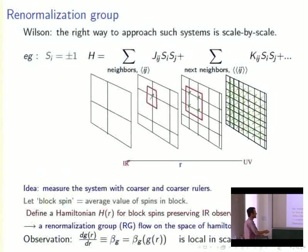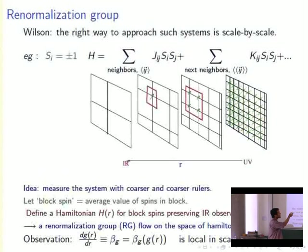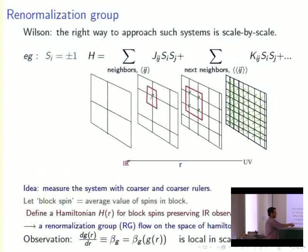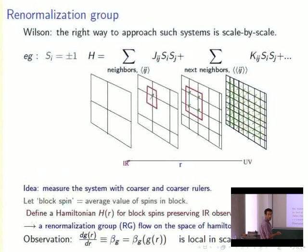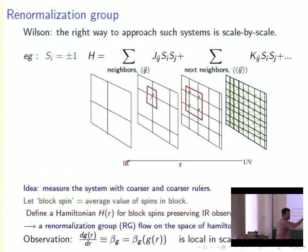This defines a flow — a family of Hamiltonians labeled by this extra dimension — a flow on the space of Hamiltonians whose coordinates are the coupling constants. If you can perform these averages over the block spins, you can derive a flow equation: how a coupling g evolves as you vary the coarseness of your rulers. The derivative is called the beta function, and an important observation is that this function only depends on the value of the coupling at the scale you're looking at — it's local in the scale direction.